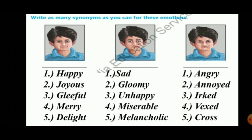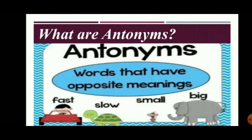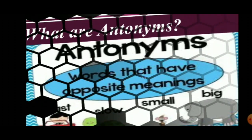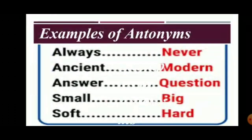The next exercise is based on antonyms. An antonym is the opposite of a synonym — synonym means same meaning, antonym means opposite meaning. For example: the opposite of fast is slow; the opposite of small is big. More examples: always/never, ancient/modern, answer/question, soft/hard. These opposite words are called antonyms.